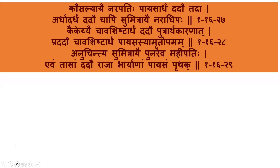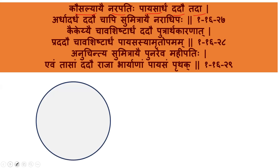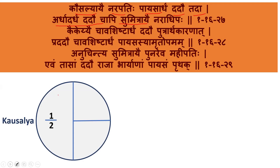So he took that payasam — the sweet dish — and distributed it to his wives. How did he distribute? 'Kausalyaye narapathihi payasardham dadav tatha' — payasardham, that is half of the payasam, he gave to Kausalya. 'Ardhadardham dadav chapi sumitraye naradipaha' — ardhadardham, that is half of half, which is one-fourth, he gave to Sumitra.